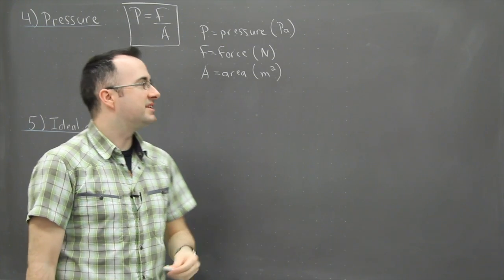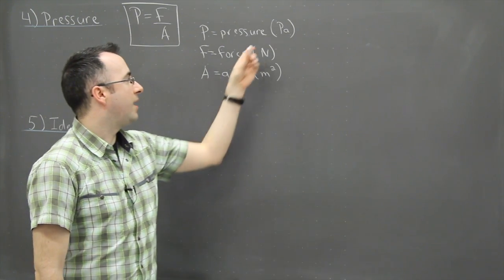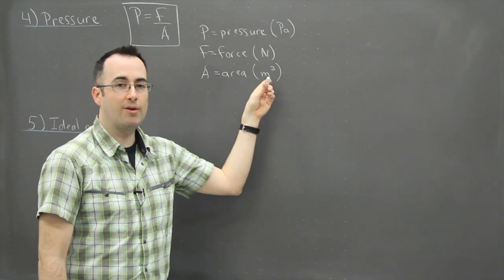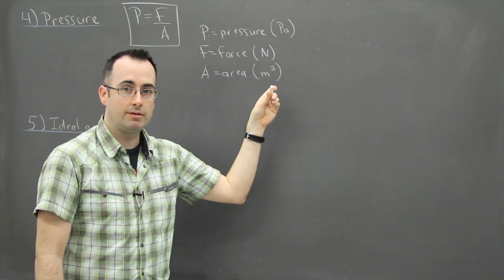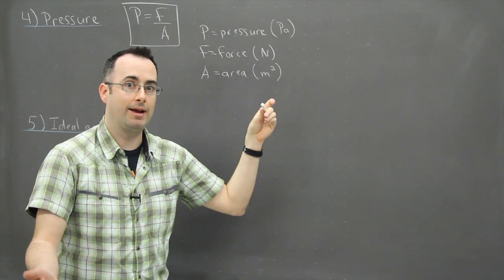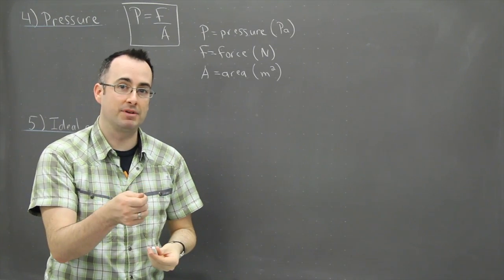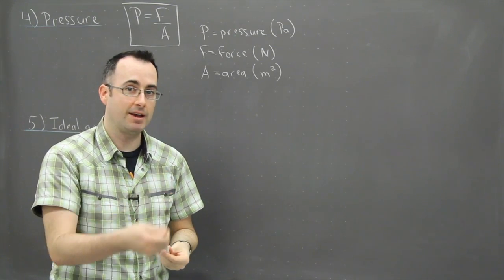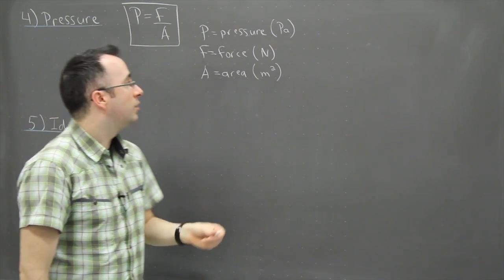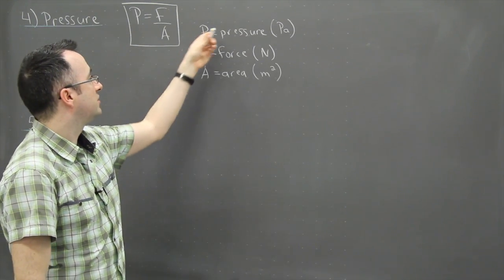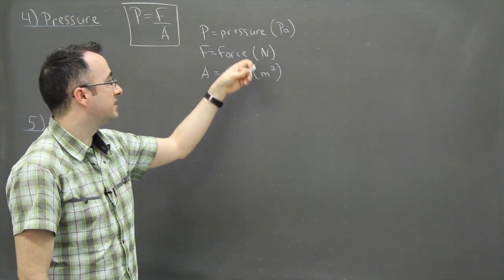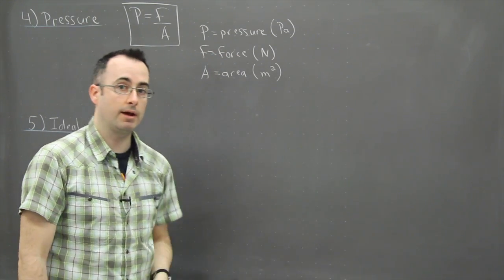Americans like to express pressure in pounds per square inch — PSI. If you look at a tire, for example, it says the PSI of your tire. Well, that's just the pressure — the force divided by the area.